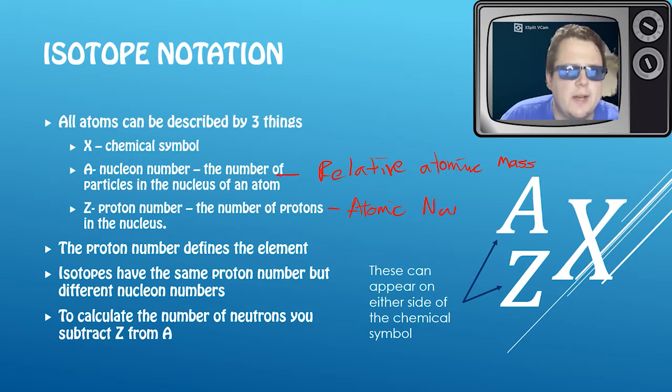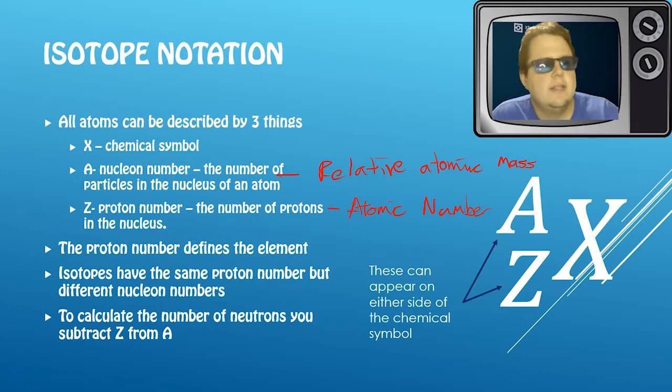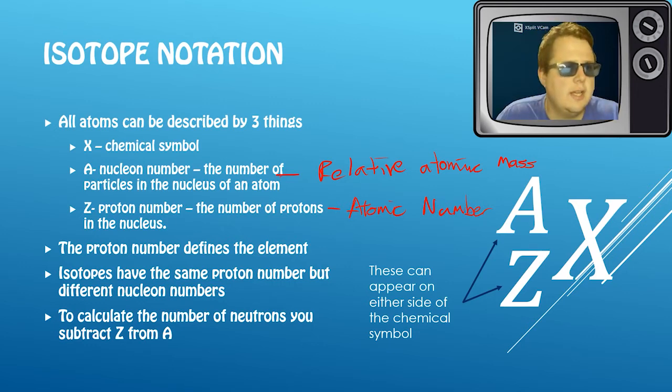Because it defines what element this is. So proton number defines the element. Now isotopes - key definition that you should learn - have the same proton number but different nucleon numbers.